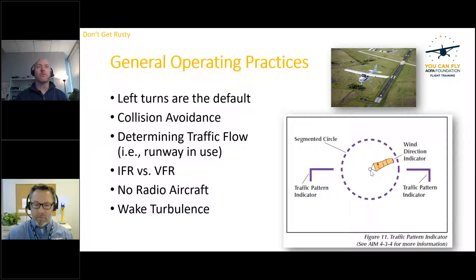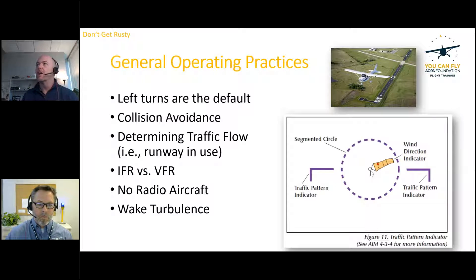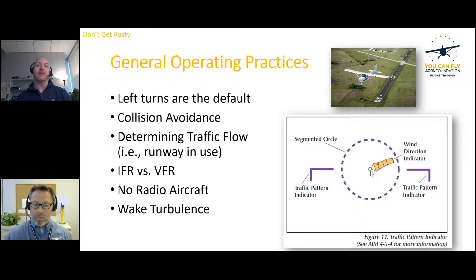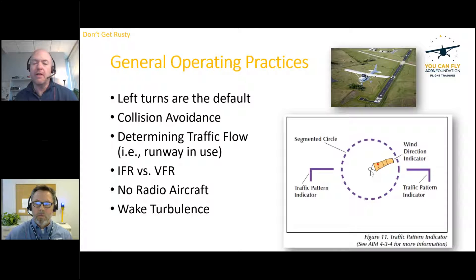For non-towered fields, general operating principles: first, left turns are the default. We assume left turns unless noted otherwise. The FAA Advisory Circular — AC 90-66B, Change 1, the most up-to-date version — is the guide used here. One of the first things it covers is the segmented circle. The lines on the segmented circle represent base and final, not upwind and crosswind as some students mistakenly believe. This is important for reading traffic pattern direction at an airport.